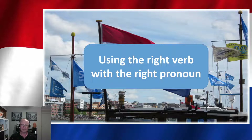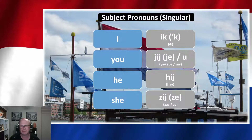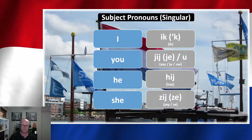One of the things I wanted to first explain was the different pronouns used in the Dutch language. There are a number of different pronouns. Let's talk about the singular subject pronouns — talking about a particular subject or individual. So we've got singular subjects: I, you, he, she.